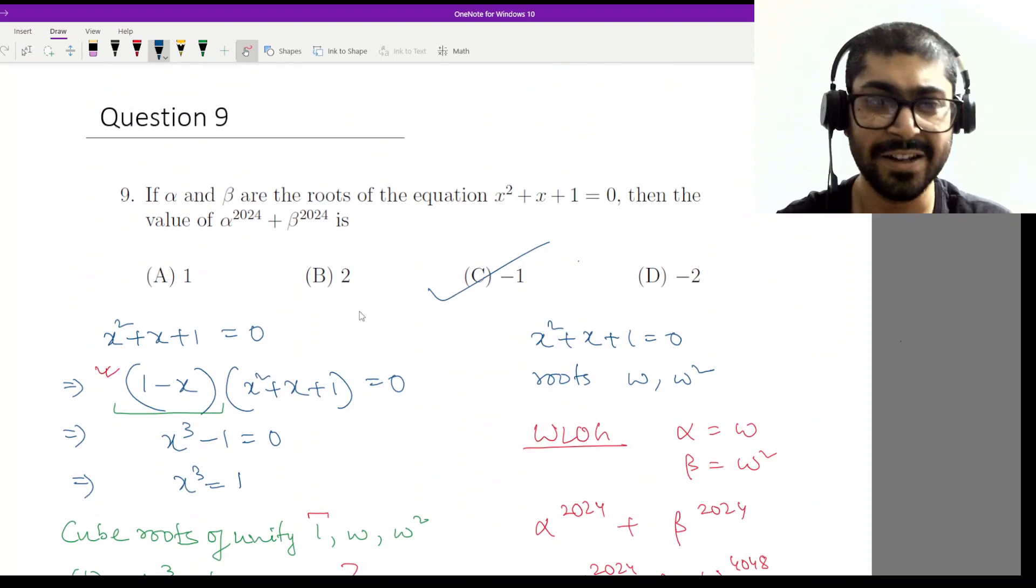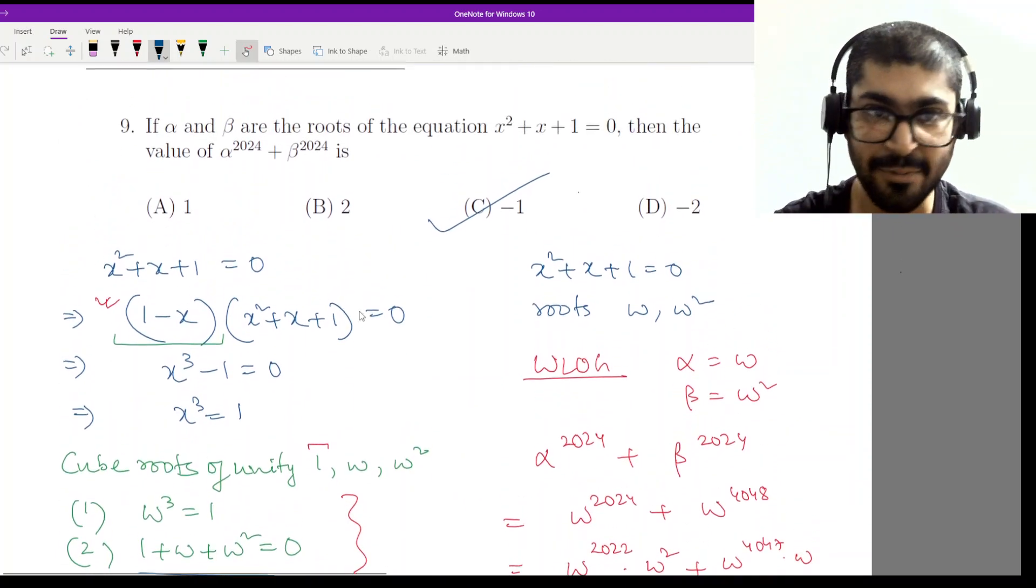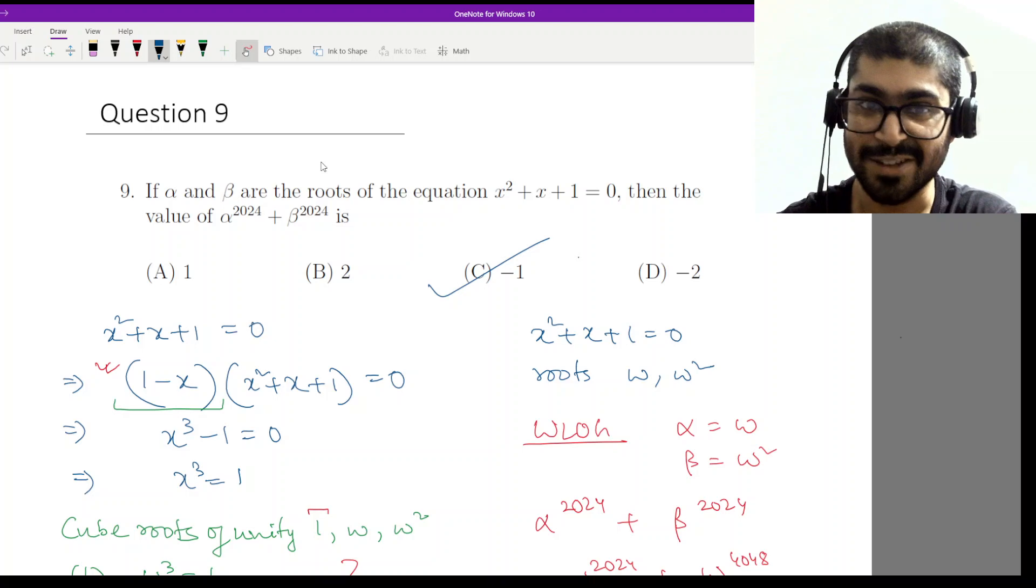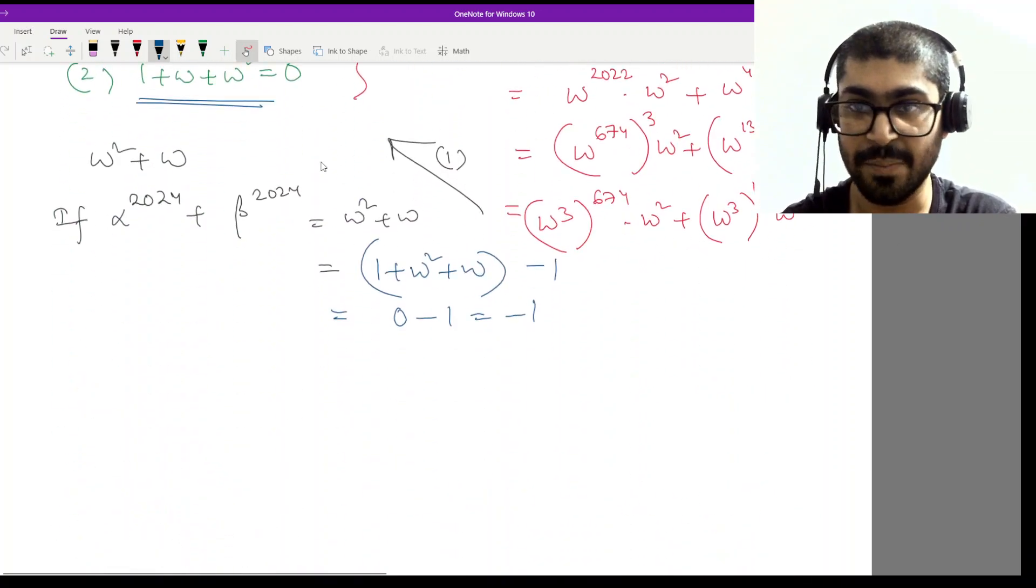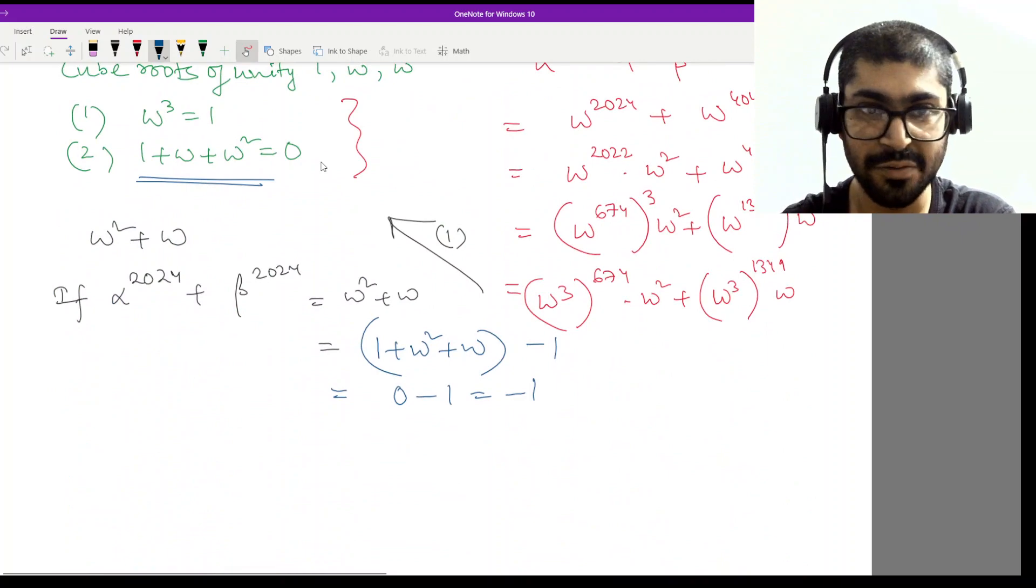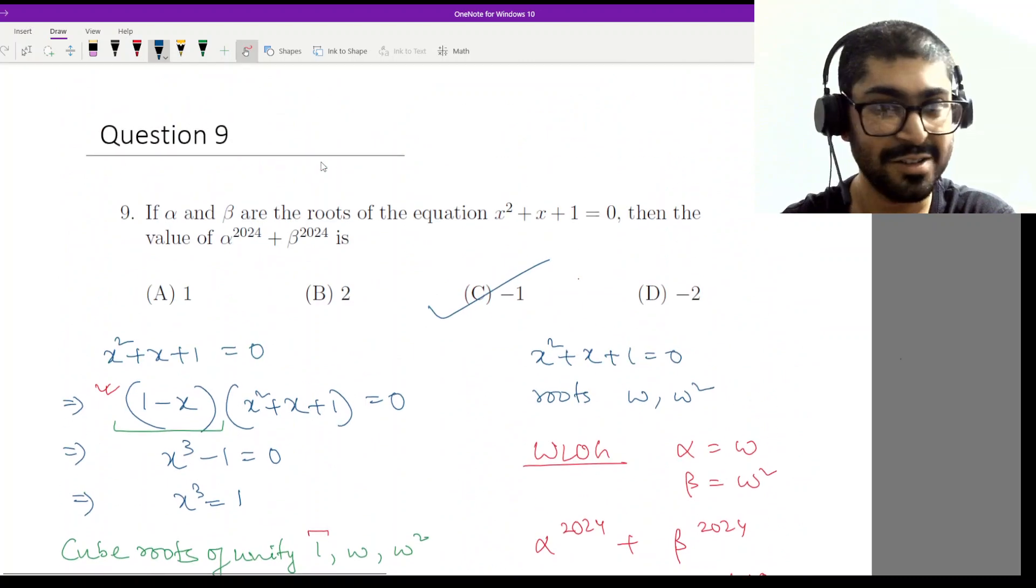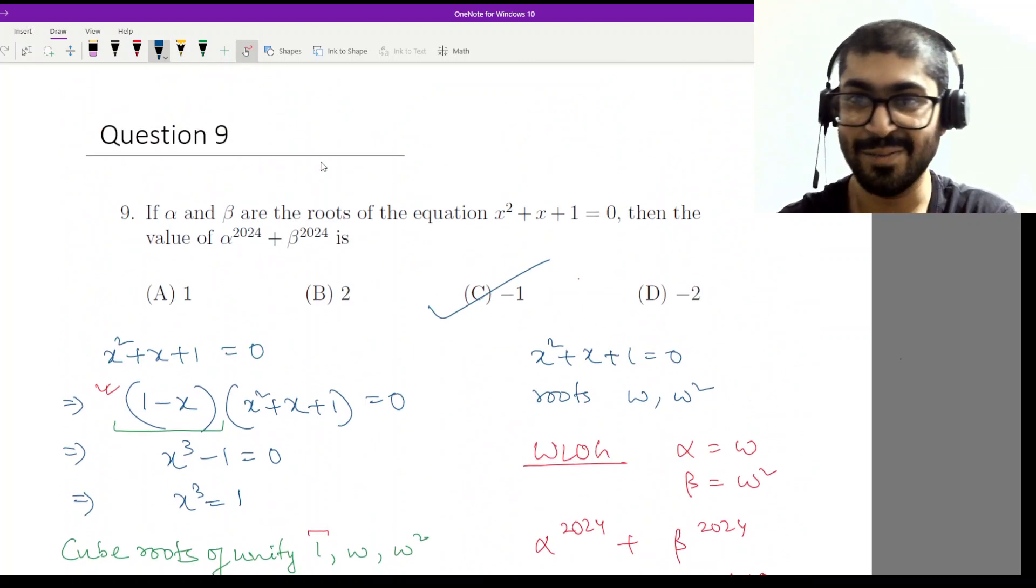Alright? So again, quite a simple problem. These type of problems are given in such a way that it might appear to be from a particular chapter, but it is actually not from the chapter. So it appears to be a quadratic equation, but you can easily solve it via complex numbers. Use the cube root of unity. Use those properties and you can solve this one easily. So I'll end this video here and we'll meet again in question 10. Alright? Bye.